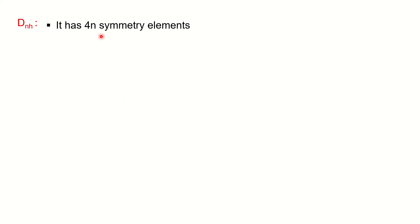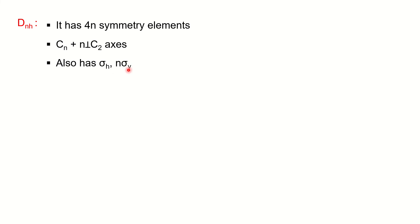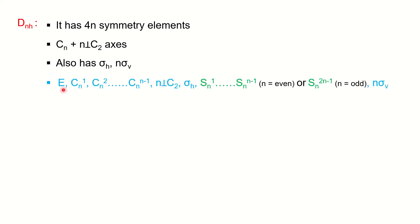For DNH, the total symmetry operations are 4N. To determine if a molecule falls in the DN point group, it must have N perpendicular C2 axes in addition to the principal axis. When that condition is met and the molecule also has a horizontal or molecular plane, it is DNH. It will also have vertical planes. Planar molecules generally have a molecular plane.